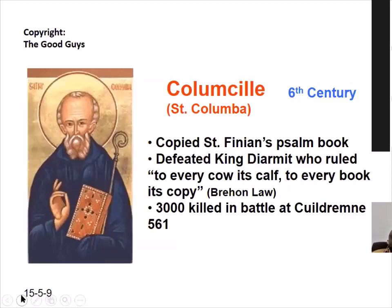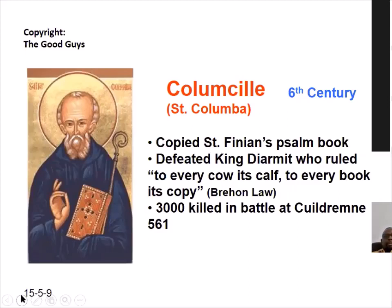In the sixth century in Ireland, St. Columba — or Columkill — copied St. Finian's psalm book. King Dermott ruled against him, saying 'to every cow its calf, to every book its copy,' and ruled against copying. After that, a big battle at Culladrine in the west of Ireland saw 3,000 men die and Columkill won. Later he was exiled to Scotland, but he brought all of his copyists with him, and his monks went all over Europe spreading learning during the dark ages.